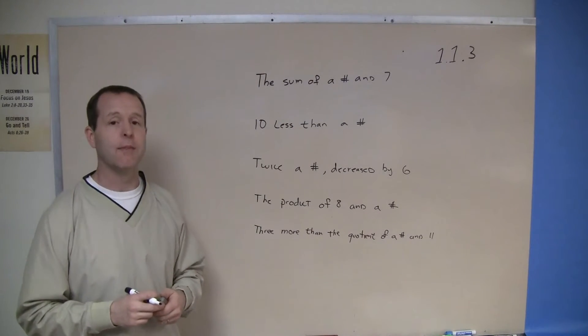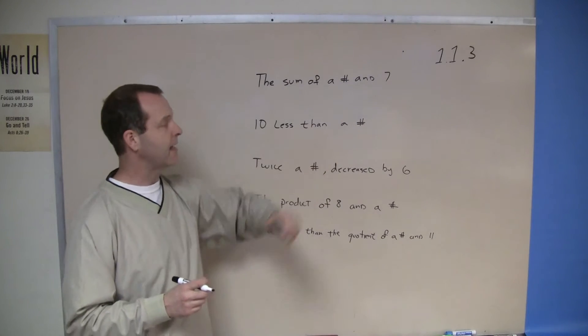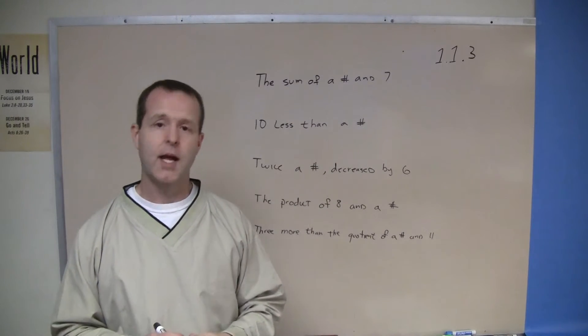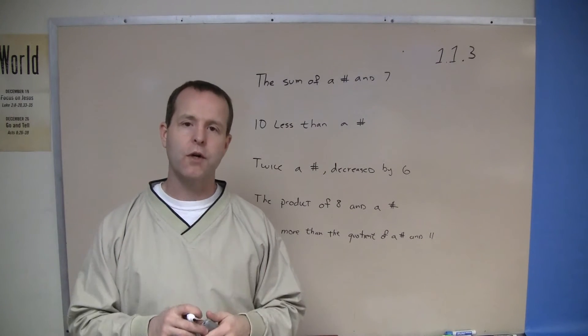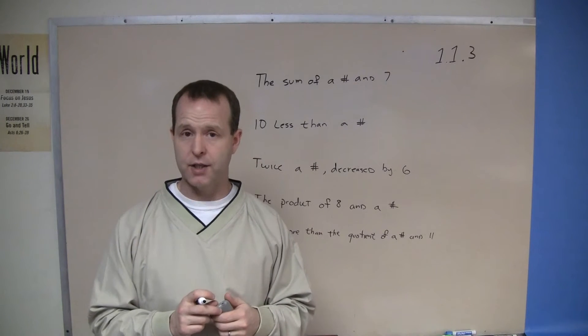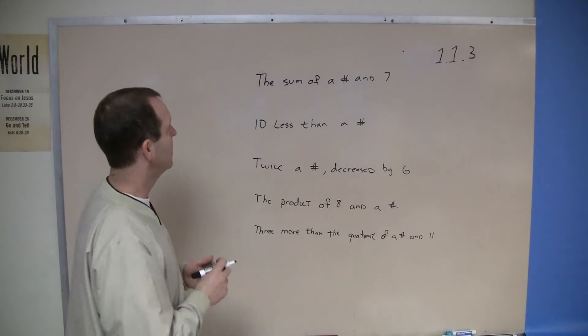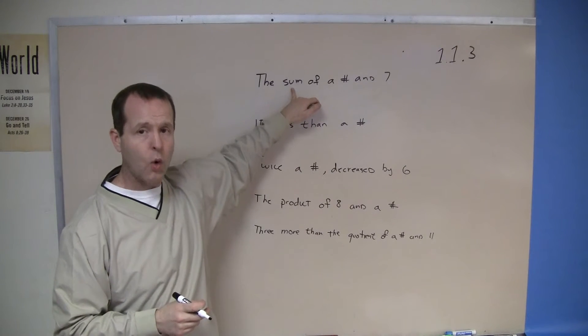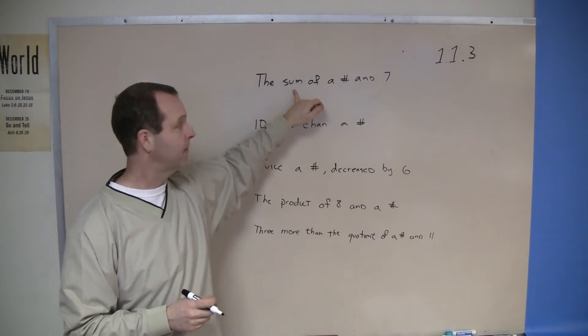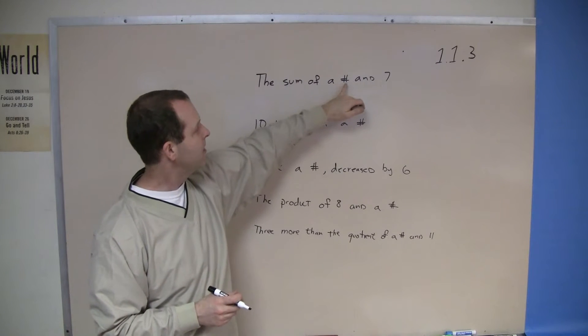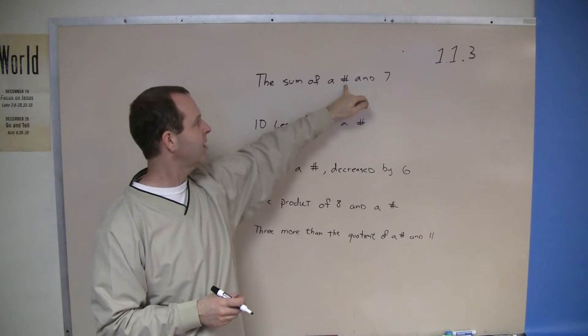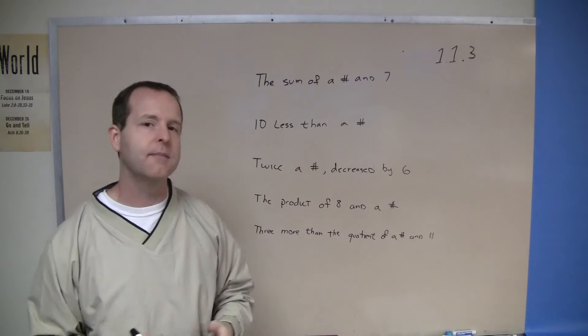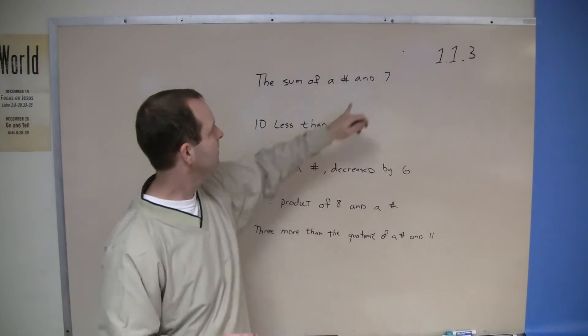So I have written a couple of statements. The sum of a number and seven - how can I change that over to just simply a mathematical expression? Well, I need to know what a couple of these words mean. Sum will always mean an addition of some type. Number is representing some type of a variable, and seven.